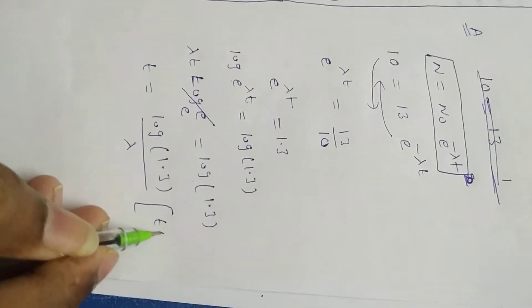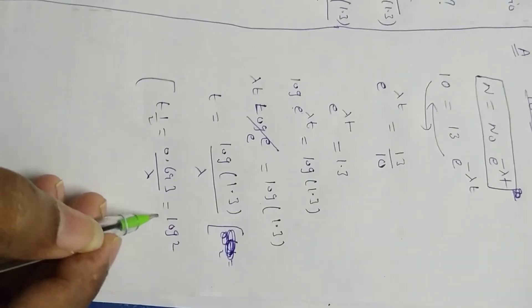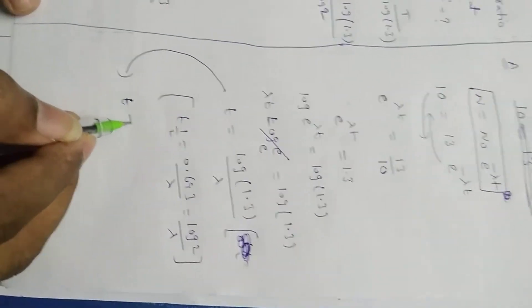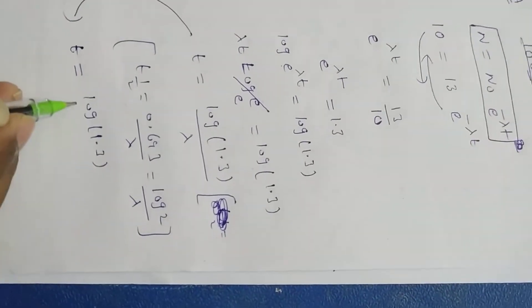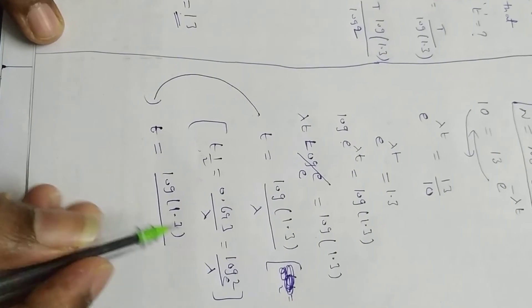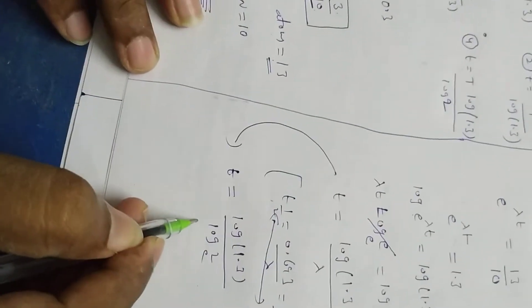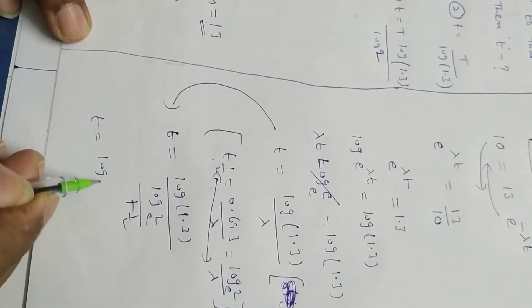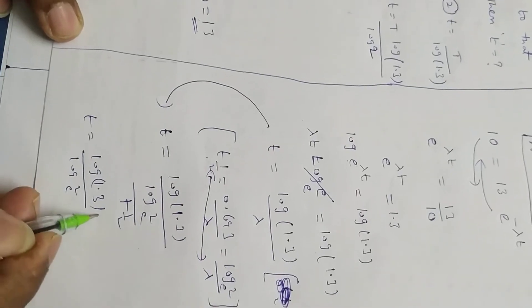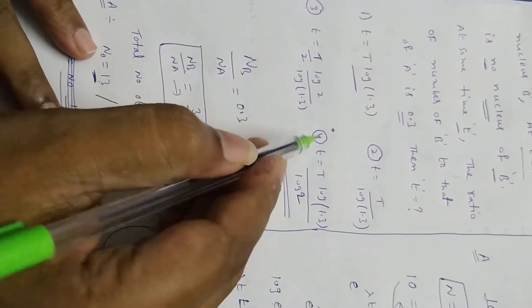But in the chapter, t half equals 0.693 by lambda. In mathematics, 0.693 is log 2 base e by lambda. So lambda writes as log 2 base e divided by t half. Cross multiply and neatly write as: t equal to log of 1.3 by log 2 base e into t half. This is the option - 1.3 - fourth option is the right option.